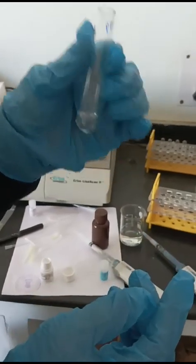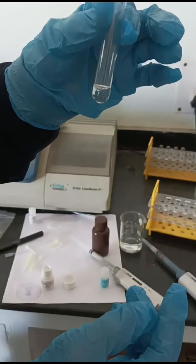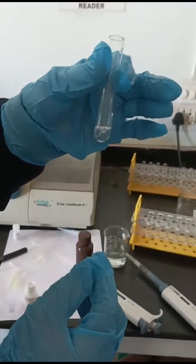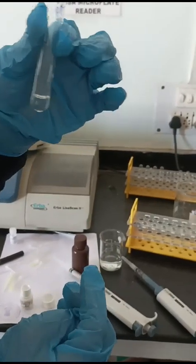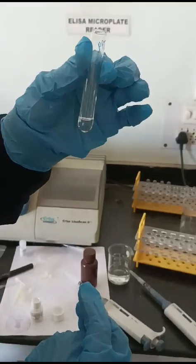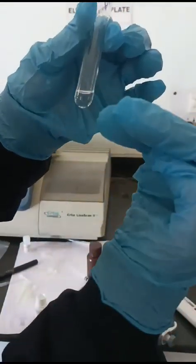We will use this test tube for centrifuge at 3,000 rpm, revolution per minute, for 10 minutes. Once centrifugation takes place, all the precipitation will be settled down.